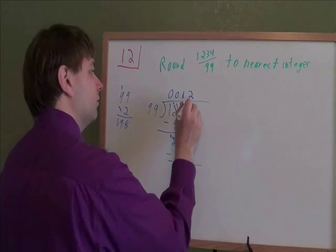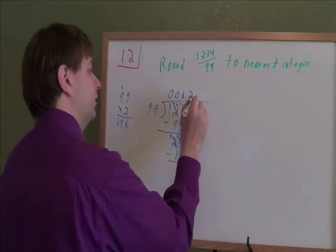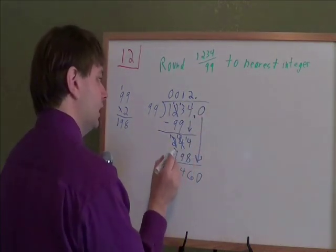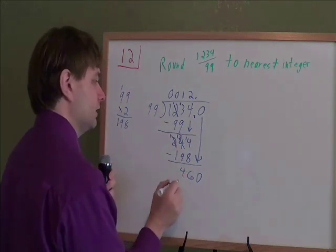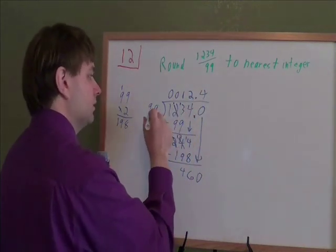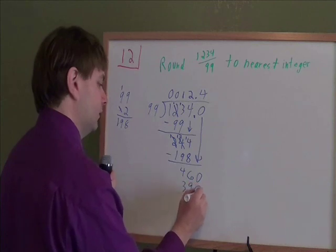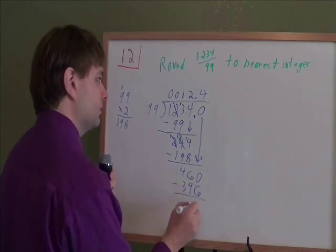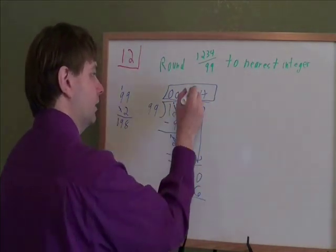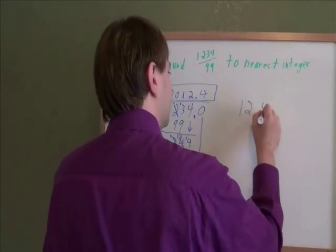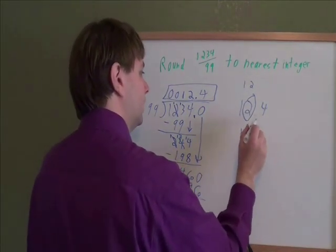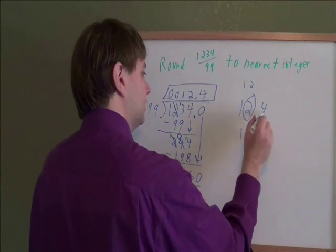Now if we want to round to the nearest integer, we've got to go one past the unit place. So we've got to the integer place right now, but we need to keep going. So we put a 0 there and drag it down. And how many times does 99 go into 460? Well, 99 is almost 100, so it'll go in about 4 times. It turns out that 99 times 4 would be 396. It doesn't really matter what you get when you subtract there, because you've got what you need. 12.4.